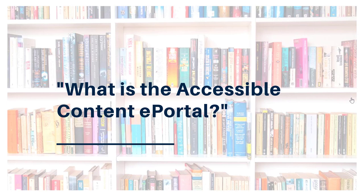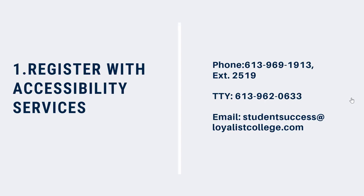How do you use ACE? There are three simple steps. First, you'll need to register with the college's Accessibility Services Department. You can do this by phone or in person when the building is open, or you can contact them by email at studentsuccess@loyalistcollege.com.